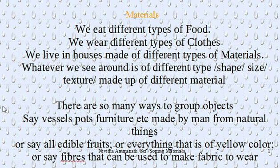We eat different types of food. For example, rice, or we use wheat flour to make a chapati, or maybe maize flour or corn flour to make a pizza. We wear different types of clothes — maybe a cotton shirt, a silk sari, or a velvet blouse. We live in houses made of different materials, such as bricks, stone, steel, wood, and cement.